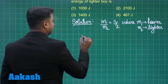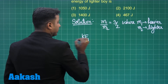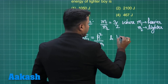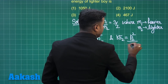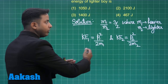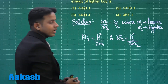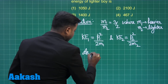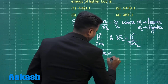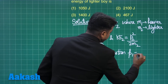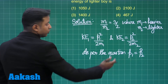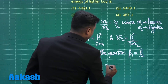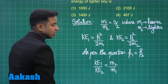From kinetic energy concepts: KE₁ = P₁²/(2M₁) and KE₂ = P₂²/(2M₂), where P₁ and P₂ are the respective momenta. Since momentum 1 equals momentum 2, we can substitute to get KE₁/KE₂ = M₂/M₁.